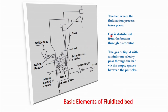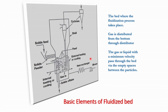Gas is distributed from the bottom through the distributor — there are several different kinds of distributors which will be discussed later. The gas or liquid with a minimum velocity passes through the bed via the empty space between the particles and causes minimum fluidization. These are the basic elements of the fluidized bed. There are also other accessories depending on the operation and installation design.